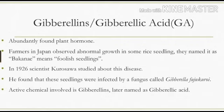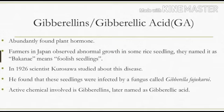In 1926, the scientist Kurosawa studied this disease and said that these seedlings were infected by a fungus called Gibberella fujikuroi. There was also an active chemical involved in the different behavior — growing longer than the normal size — of these plants. That chemical is known as gibberellin, which was later called gibberellic acid.